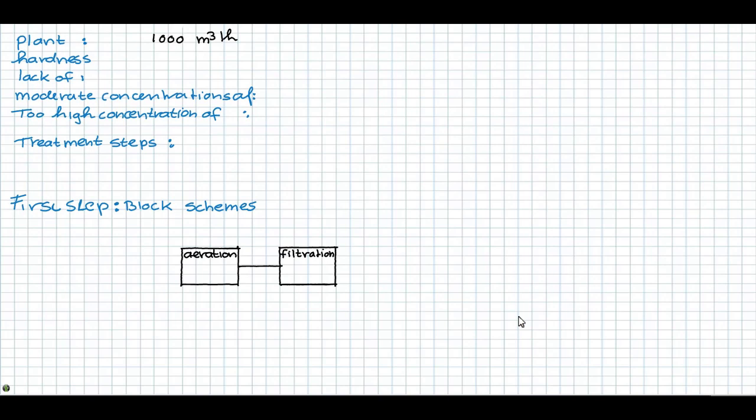That treats anoxic hard groundwater with 2.5 millimole per liter hardness. The water is characterized by a lack of oxygen, moderate concentrations of iron, manganese and ammonia.